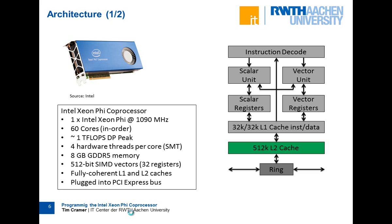Also important to know: you have 512-bit SIMD vectors, giving you 32 registers in total. Dirk will show you in the afternoon session how to use these very long vectors. In comparison to Westmere nodes, which have 128-bit SIMD vectors, this is 4 times more. Sandy Bridge has 256-bit SIMD vectors.